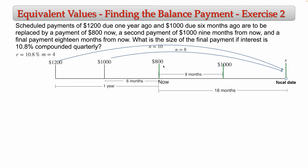For the replacement payment of 800 at now, going forward 18 months to the focal date gives 18 ÷ 3 = 6 quarters, so n = 6. For the replacement payment of 1000 at nine months from now, going forward to the focal date is another 9 months, so 9 ÷ 3 = 3 quarters, giving n = 3. Now we have all n values.